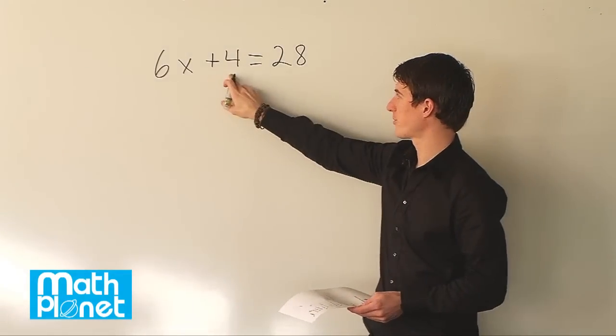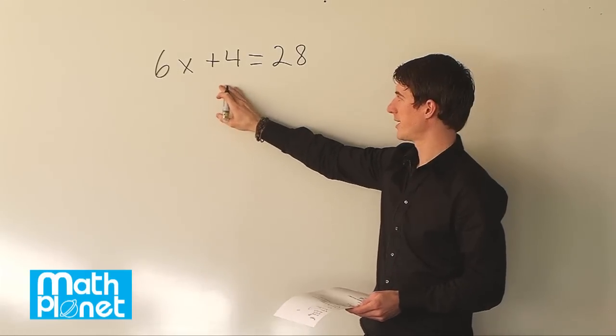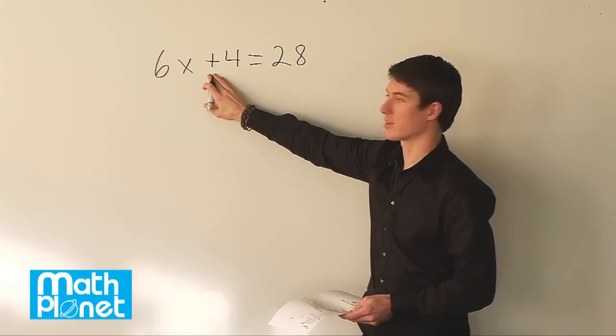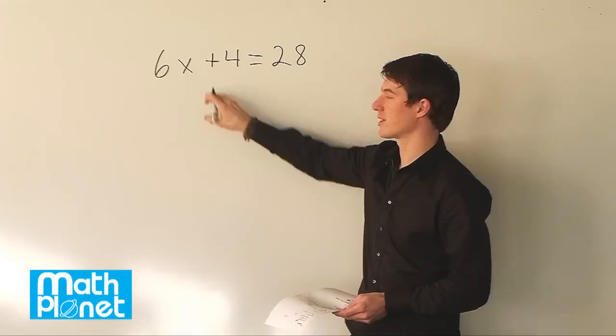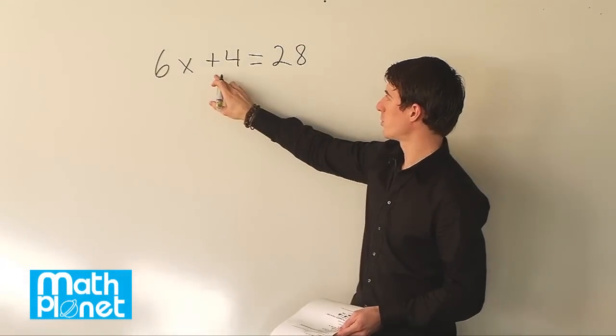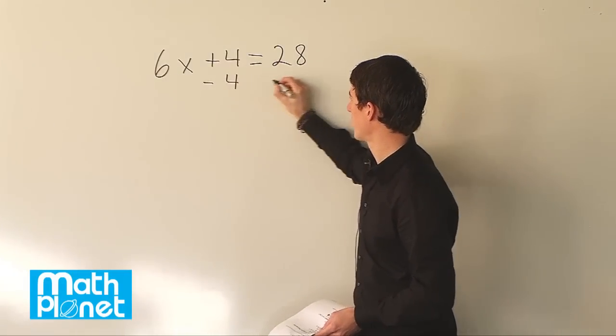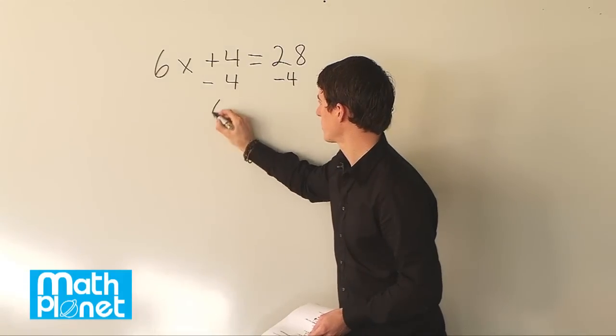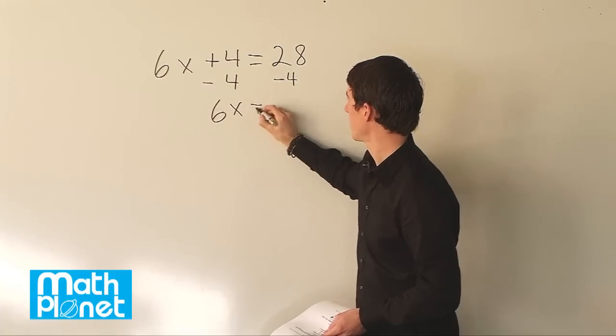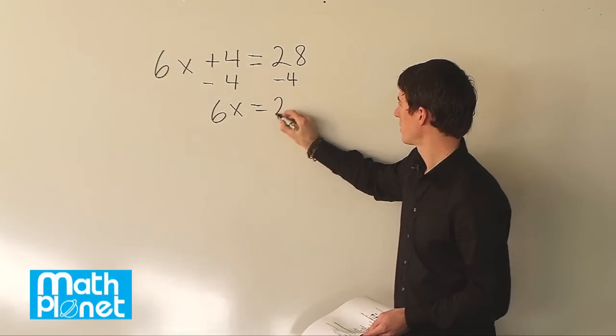So we have plus 4. The inverse operation of plus is minus, or the inverse operation of addition is subtraction. So we need to subtract 4 from both sides. So we have minus 4 and minus 4. That gives us just 6x equals 28 minus 4, which is 24.